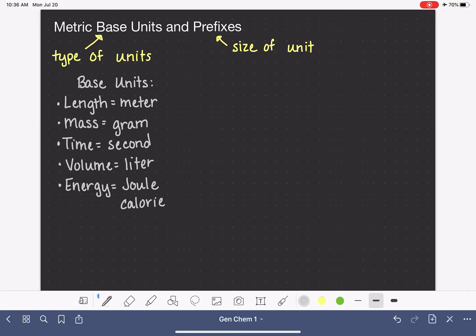In terms of abbreviation, the abbreviation for meter is a lowercase m. The abbreviation for gram, lowercase g. For second, a lowercase s. For liter, a capital L. For joule, a capital J. And for calorie, lowercase c-a-l. Again, do not capitalize because that means something different.